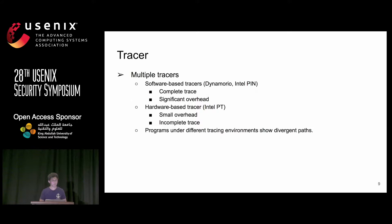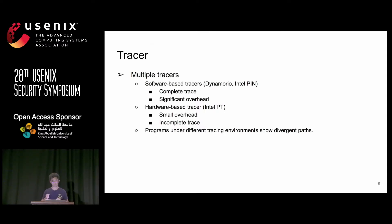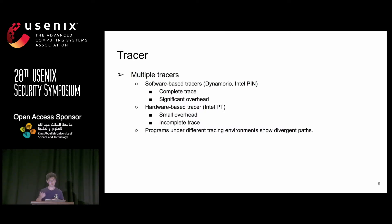RAZOR uses multiple tracers, including both software-based and hardware-based tracers. Software-based tracers such as DynamoRIO and PIN provide complete traces but introduce significant overhead. Hardware-based tracers such as Intel PT have small overhead but the trace is often incomplete due to data loss. Another issue is that programs on different tracing environments may show divergent paths — for example, DynamoRIO automatically expands binary paths to absolute paths, which may trigger different executions compared to Intel PIN.